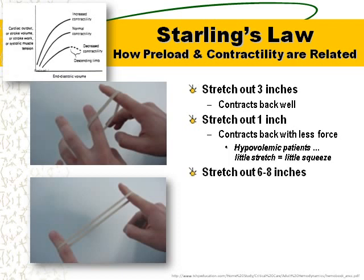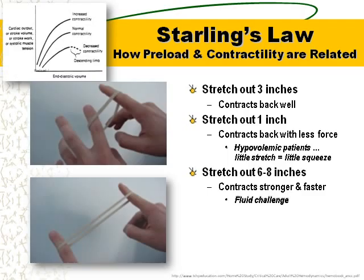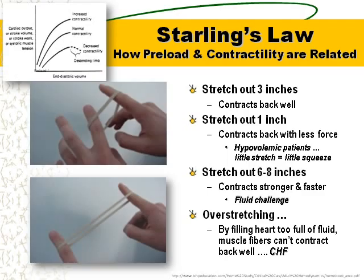If you stretch the rubber band six to eight inches and let go, that's a big snap — equivalent to a fluid challenge, contracting back stronger and faster. But if you keep over-stretching those muscle fibers, think of the big boggy heart of a CHF patient: too much fluid and the muscle fibers can't contract back well. That is Starling's Law.